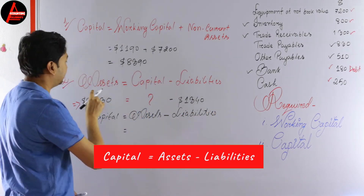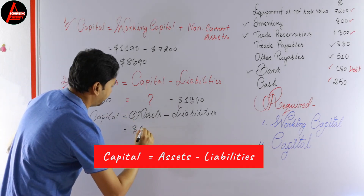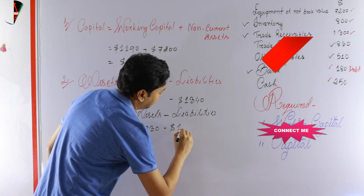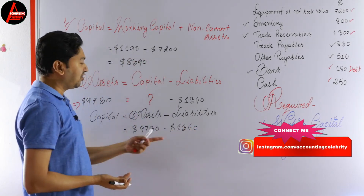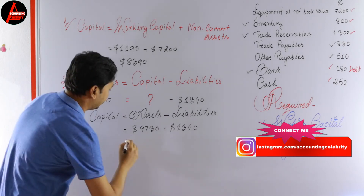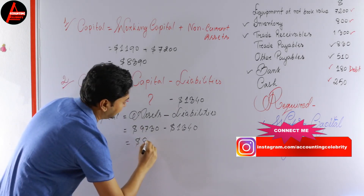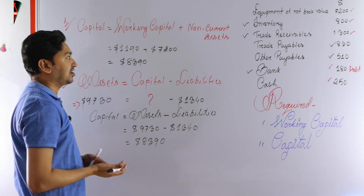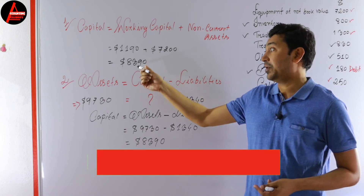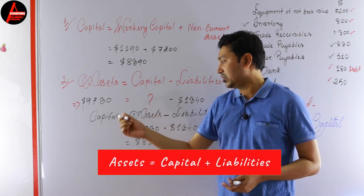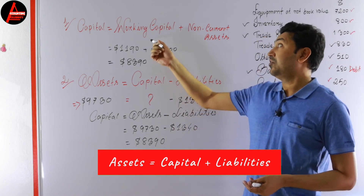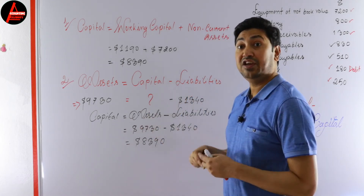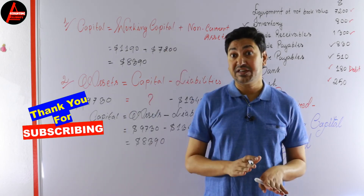We calculated total assets of 9,730 dollars and total liabilities of 1,340 dollars. Subtracting liabilities from assets gives us the same 8,390 dollars. So both methods give the same answer. You can use either formula — working capital plus non-current assets, or the accounting equation assets minus liabilities.